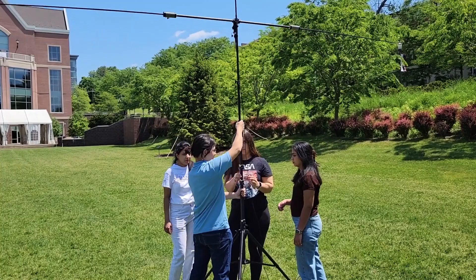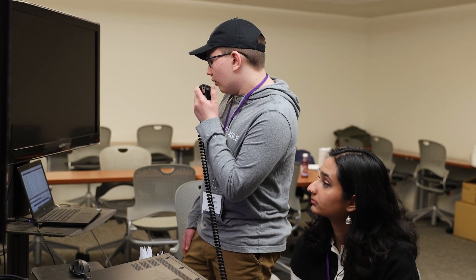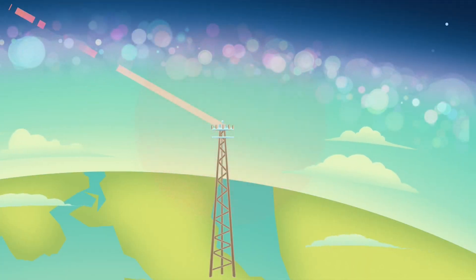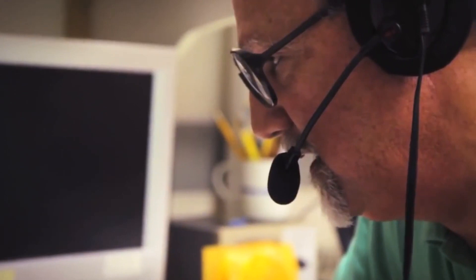Ham radio is a way you can talk to people all around the world. You set up a radio, an antenna. You talk into the radio. The radio sends a signal up to the antenna. The antenna sends a signal up to the sky. It bounces off of the electrified layer of the sky back down to Earth, where you can talk to the person on the other side.